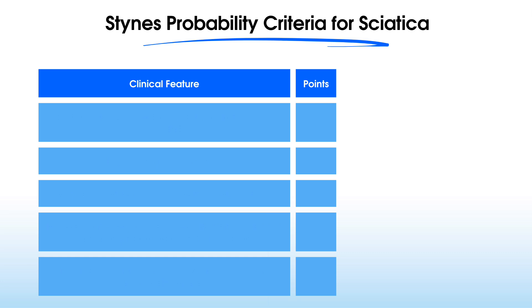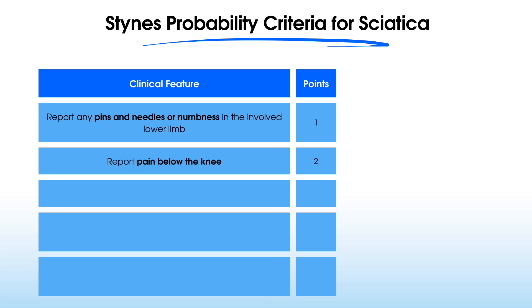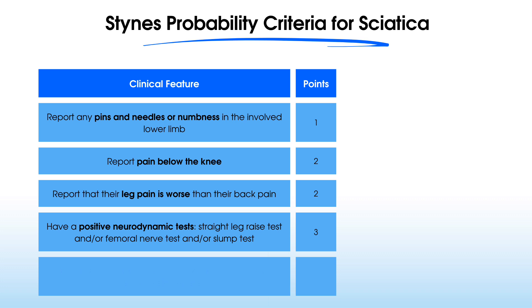So first of all, if your patient reports any pins and needles or numbness in the lower limb, they score one point. If your patient reports pain below the knee, they score two points. If your patient reports that their leg pain is worse than their back pain, they score two points. If your patient has positive neurodynamic tests — thinking about tests such as the straight leg raise or the slump test — they score three points. And if they have any changes on myotomal, reflex, or sensory testing through deficit in the lower limb, they also score two points.